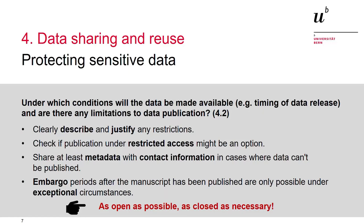Now to the second important question in this section: are there any limitations to data publication? Some data may be subject to legal, ethical, copyright, confidentiality or other constraints and can therefore not be shared at all, or sharing may only be possible under certain conditions. Such restrictions must be clearly described and justified in your DMP. There are different forms of access to published data, so check whether publication under restricted access together with a data transfer agreement would provide sufficient protection for your data. The general rule is: as open as possible, as closed as necessary.